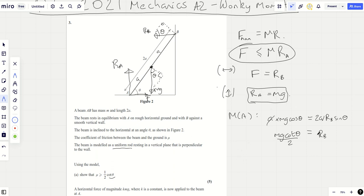Well, F is RB. So this equals F. And so what we can say is MG cot theta over 2 is less than or equal to mu times by RA, which is MG. Cancel the MGs and you get mu is greater than or equal to a half cot theta as required. And there you go. That's all there is to it.